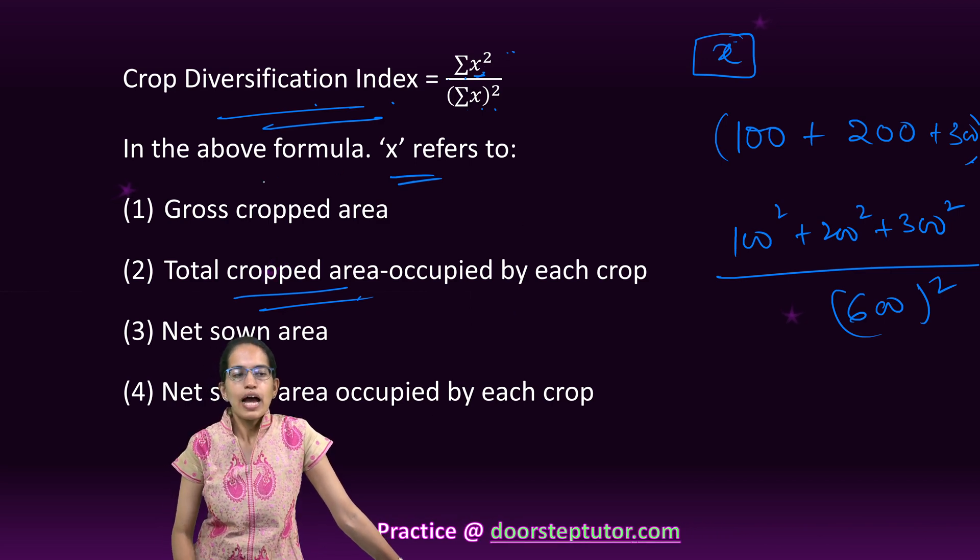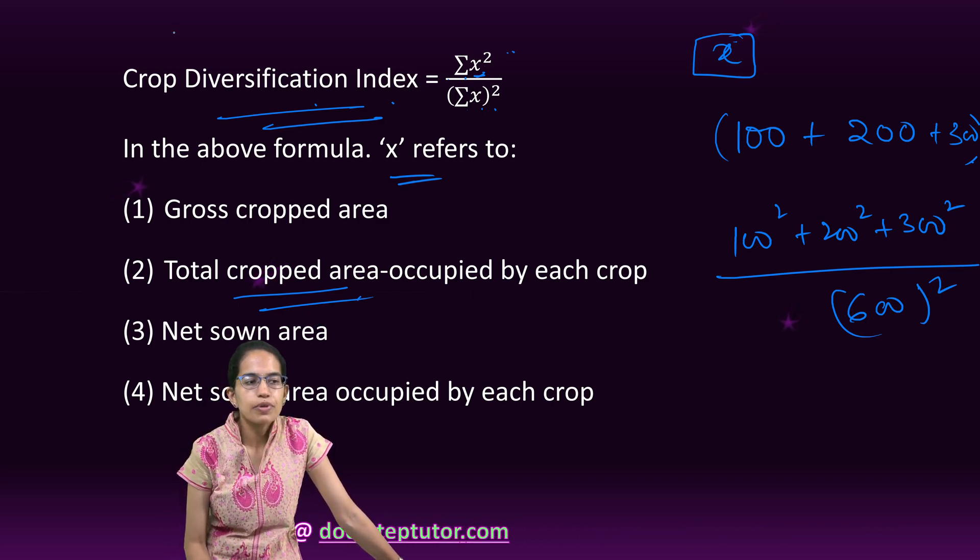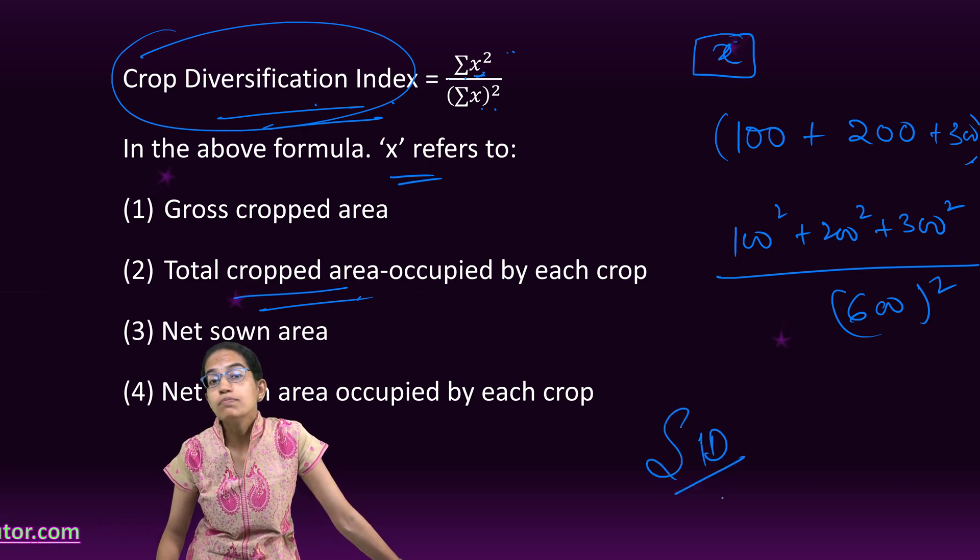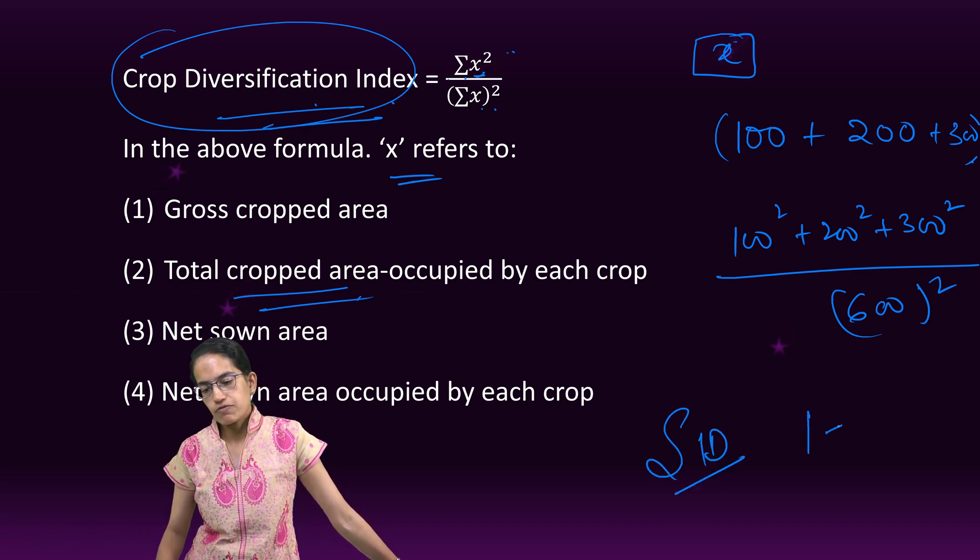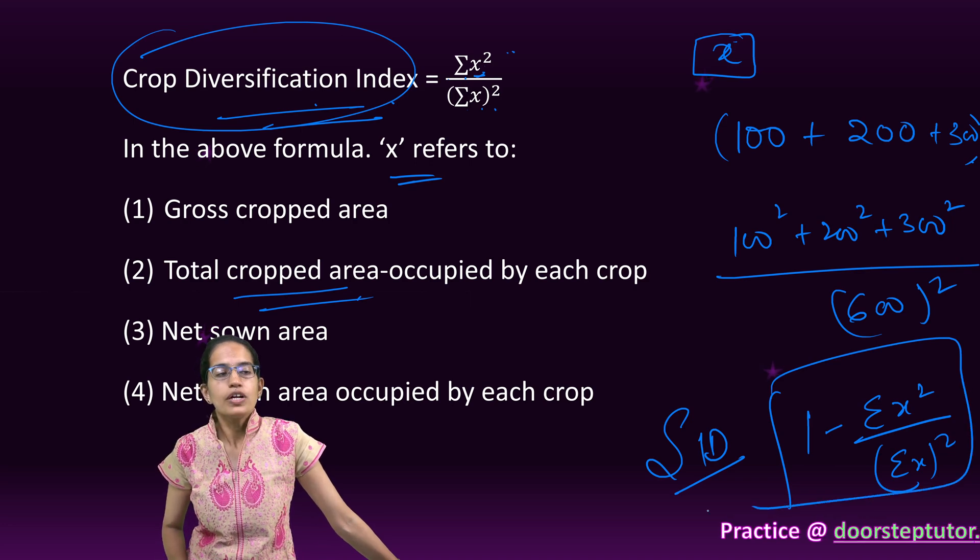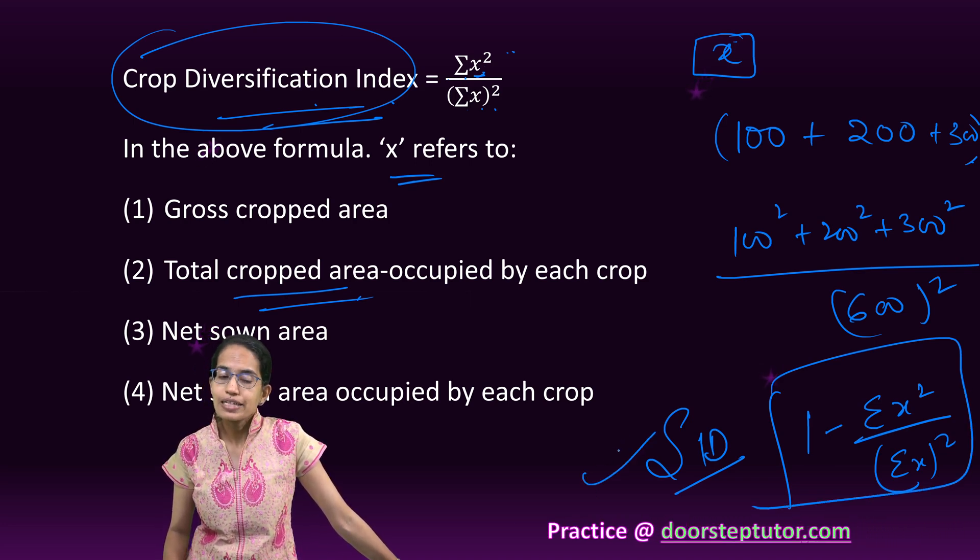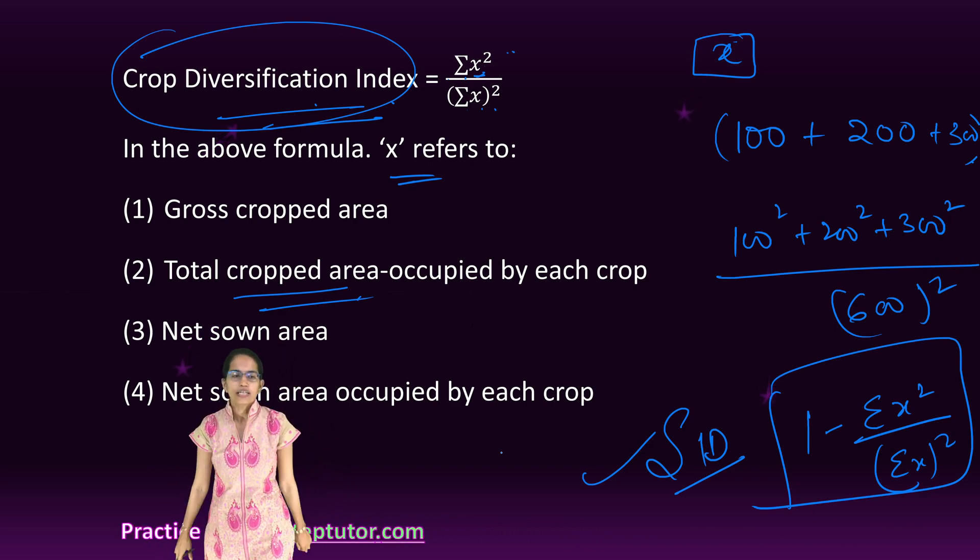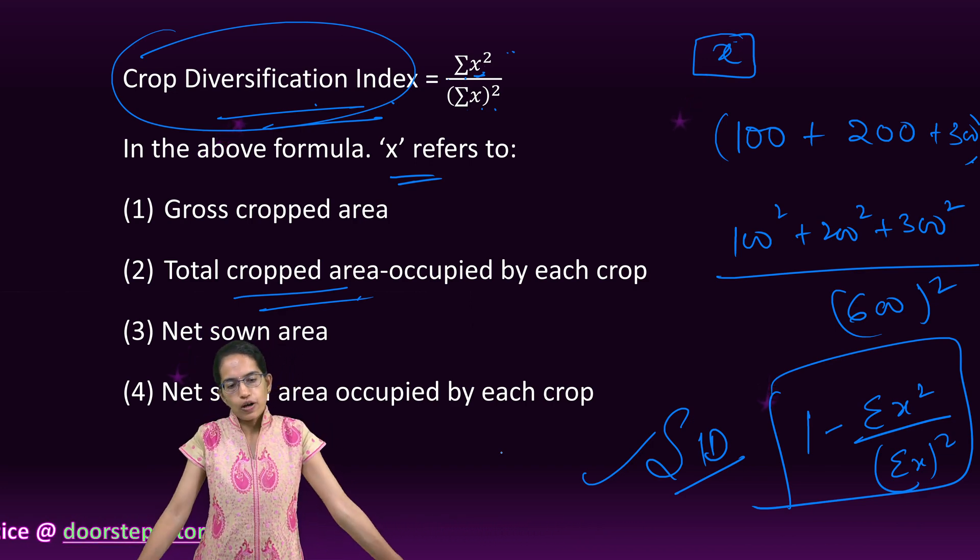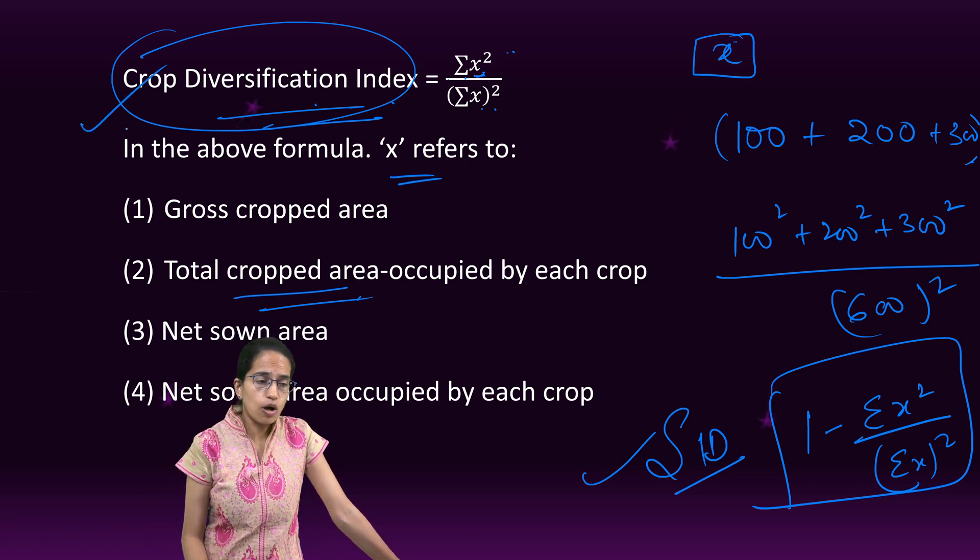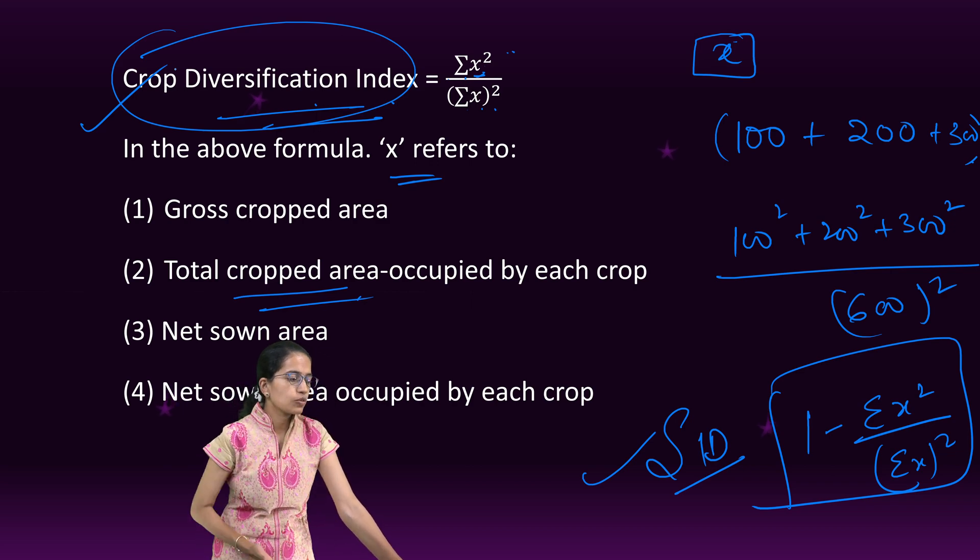In the denominator it would be 600 the whole square, and this would give me the crop diversification index. Now, again important is SID, which is Simpson's Index of Diversification, which is 1 minus summation x² divided by (summation x)². This gives you the index of diversification given by Simpson. X here in all the cases is the total area occupied by each of the crops in the region, and this helps to identify the crop diversification index.